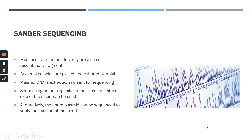This concludes the lecture on selection methods. We have now learned how a recombinant DNA fragment can be introduced into a bacterium, replicated, and its presence verified using these five different techniques, before being extracted for use in further studies. This concludes the whole principle of molecular cloning. Thank you.